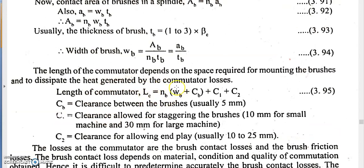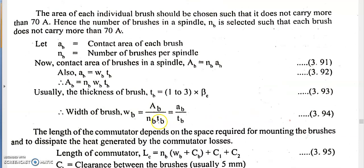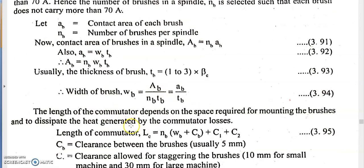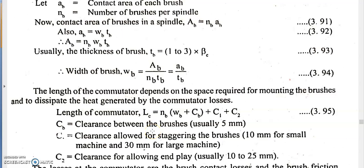The clearance values are: CB equals 5 mm between brushes; C1 is the clearance allowed for staggering the brushes — 10 mm for a small machine and 30 mm for a large machine; and C2 is the clearance for the end plane, which is 10 to 25 mm. All these clearance values are known. The number of brushes is calculated from the current criteria, and the width of the brush is calculated from the thickness criterion, enabling us to compute the commutator length.